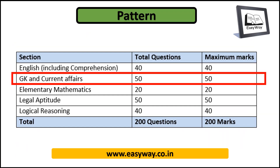GK and current affairs comprises a total of 50 questions worth 50 marks. When you go to the examination hall, this is the section that will consume the least amount of time. You can finish it quickly because either you know the answer or you don't — you don't need to solve anything. That advantage of less time is not available in other sections.